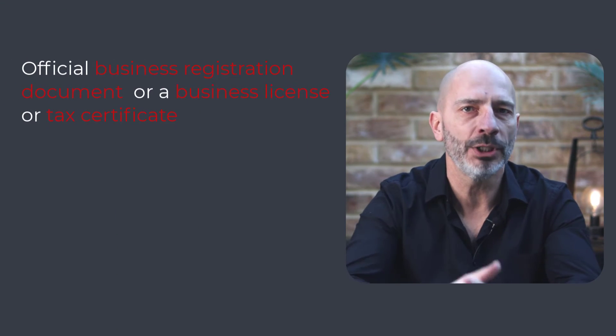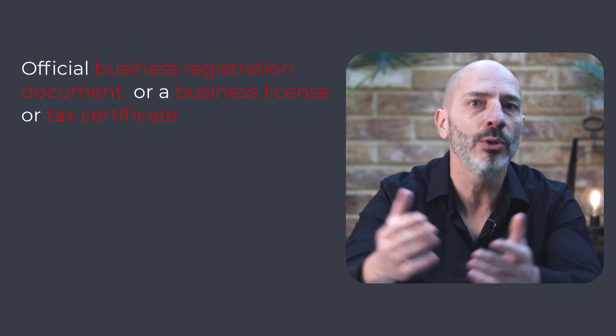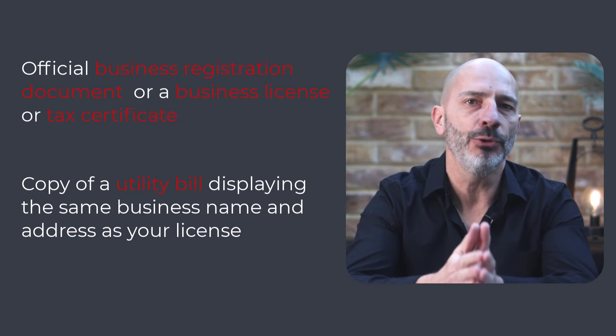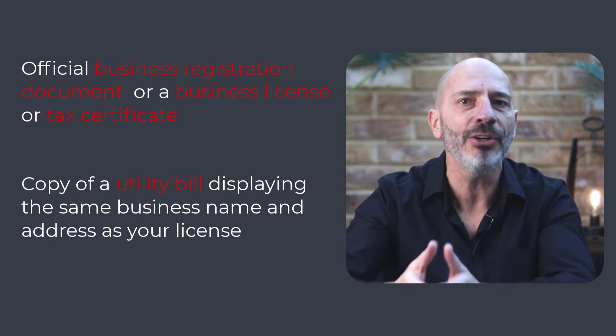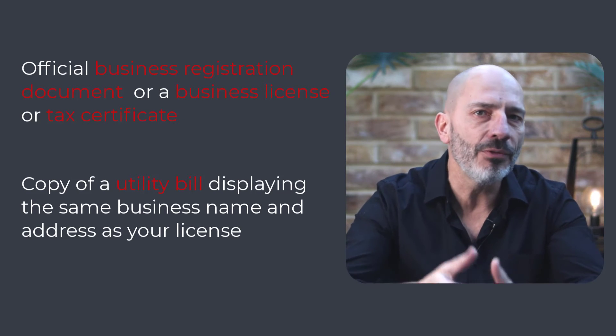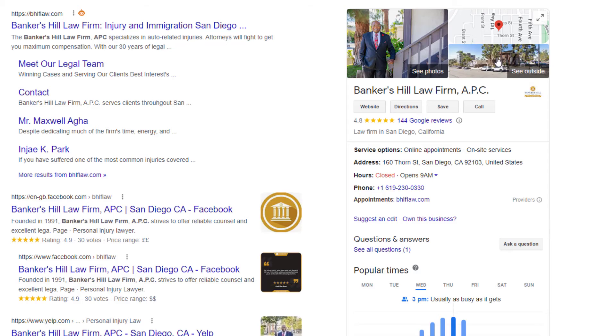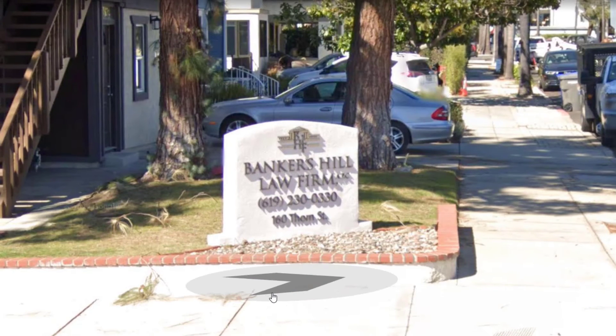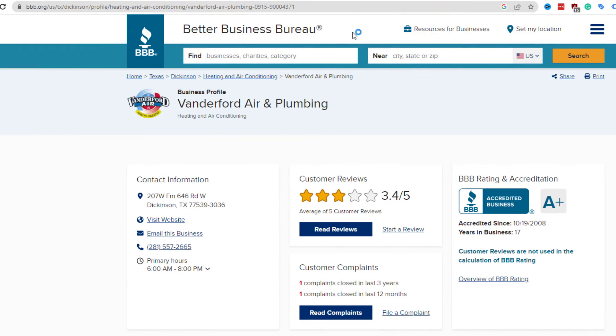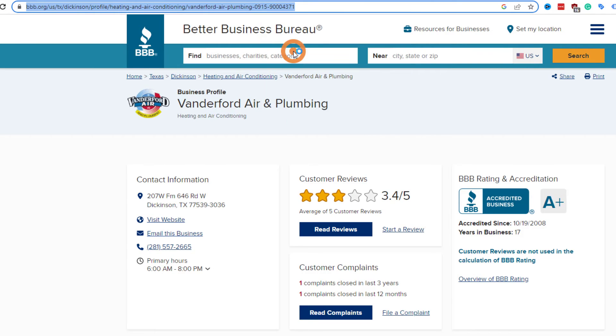Google also requires you to provide a copy of one of these documents: an official business registration document, a business license, or a tax certificate. They will also want a copy of a utility bill displaying the same business name and address as your registration or license — you can use phone, gas, water, sewage, trash, recycling, TV, or internet bills. The following items are not required but I would advise adding them to reinforce your case: if you operate from a brick-and-mortar location, take pictures of your permanent signage outside. If your business is listed on the Better Business Bureau or an official government website, grab that link.